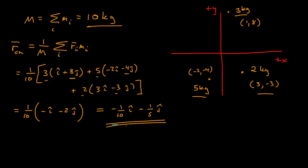Multiplying through by one over ten, the center of mass vector is −(1/10) î − (1/5) ĵ. So where is that exactly? It's very close to the origin — about −0.1 in x and −0.2 in y — meaning we have a fairly balanced distribution of masses. These are in meters.